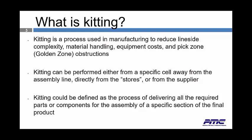Kitting is a process used by the manufacturer to reduce the line-side complexity, material handling, equipment costs, and pick zone or golden zone obstructions. Kitting can be performed either from a specific cell away from the assembly line, directly from the stores, or from the supplier. Kitting can be defined as a process of delivering all the required parts or components for the assembly of a specific section of the final product.